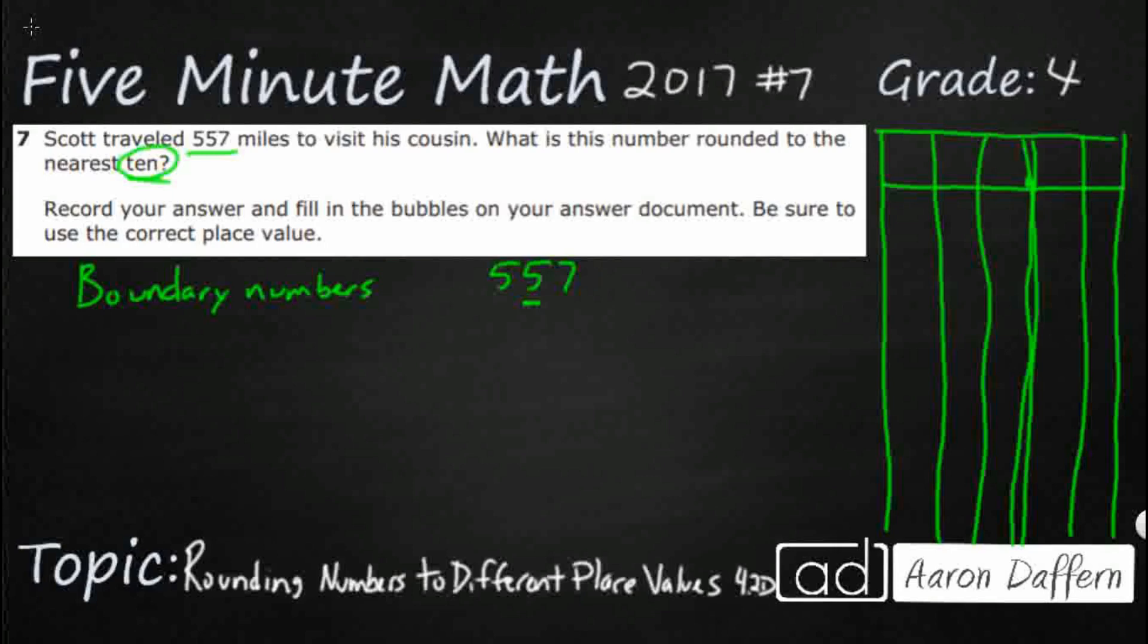So every digit to the left of that stays the same. And so what you're going to do is you're going to write two different numbers. One number is when you're going to write every digit to the left of it that stays the same, like five. And you're going to keep that number the same. So that's also stays a five. And then every digit to the right of the number you're looking at always turns into a zero. So 550, that's one boundary number.